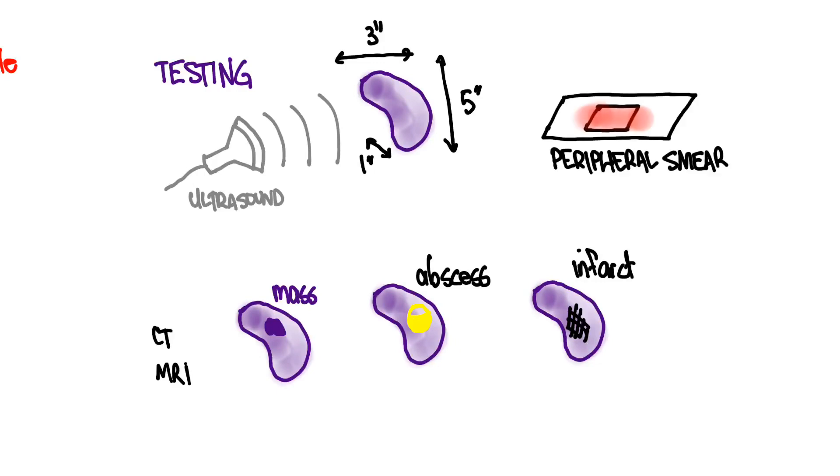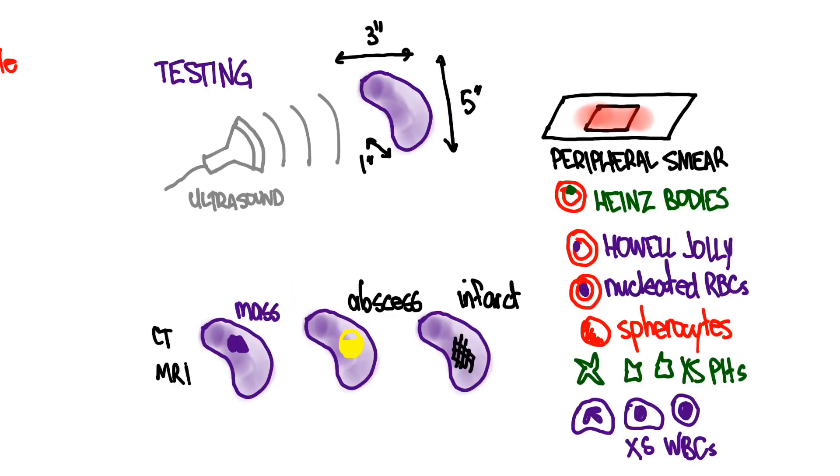And one of the main reasons that I went through all that splenic function, telling you how all the things that it does, is because of this: the peripheral smear. When you get this back, if you see some of those things that the spleen should have taken care of, then that is a hint that there might be some splenic disease going on. So if you see Heinz bodies, or Howell-Jolly bodies, or nucleated RBCs, or spherocytes, these are things that the spleen should have taken care of, but hasn't. And so that might be an indication that something is wrong with the spleen.